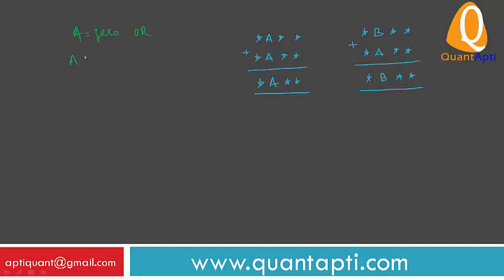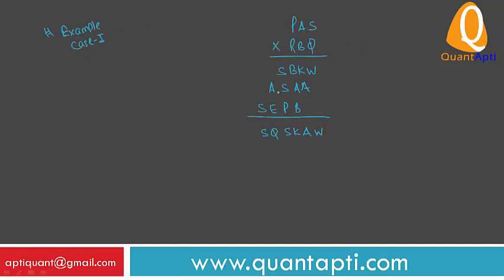A can also be equal to 9. How? It depends on whether or not a carry of 1 is received from the previous column. The number 9 mimics 0 every time it gets a carry over. If a carry of 1 is received, then A can equal 9. So A is equal to 0, and A can also equal 9 depending on the carry.